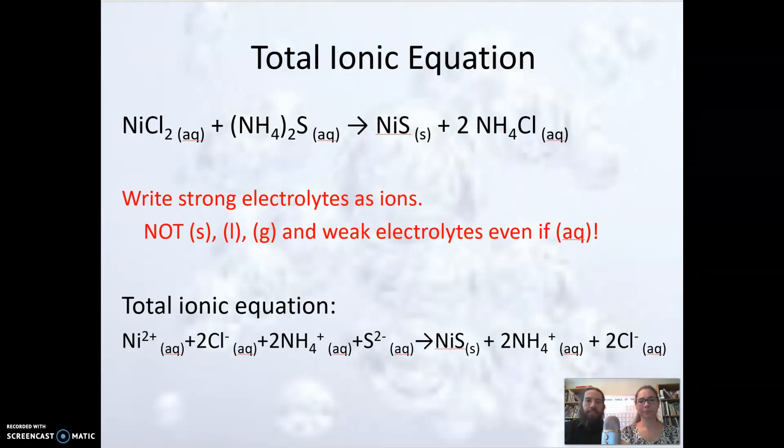It's kind of a more accurate way of writing an equation because we said before that a strong electrolyte completely forms ions in aqueous solution. So if we have like this nickel chloride, our first reactant, and that's a soluble ionic compound, that's a strong electrolyte. So really what's going on is we have nickel ions and two chloride ions in that solution.